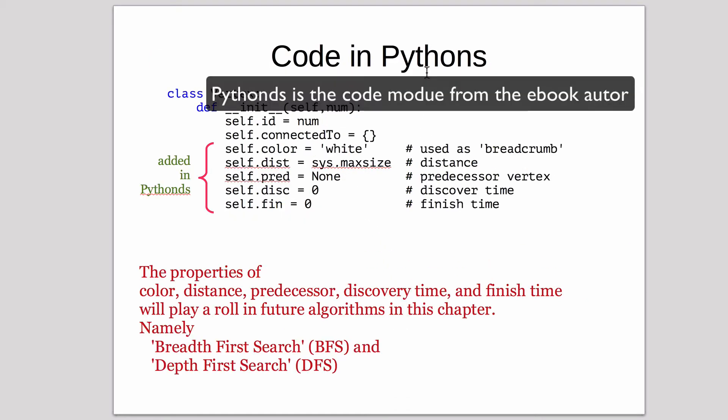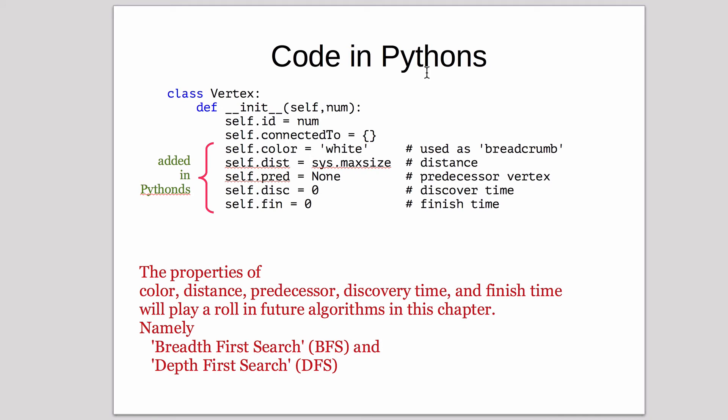Now in Pythonds, which has a more - what we just showed you was a simplified version. Pythonds adds more code to support running the different algorithms. So for example, for vertex, it adds methods to the graph and vertices for the algorithms.